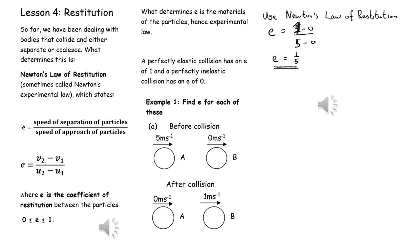In example 1a we can apply Newton's law of restitution or Newton's experimental law. E is the separation speed of the objects divided by the approach speed of the objects. The separation speed, so that's the speed after the collision, is one minus zero, and the approach speed of the objects before the collision is five minus zero, giving us the value that E is one over five or 0.2.